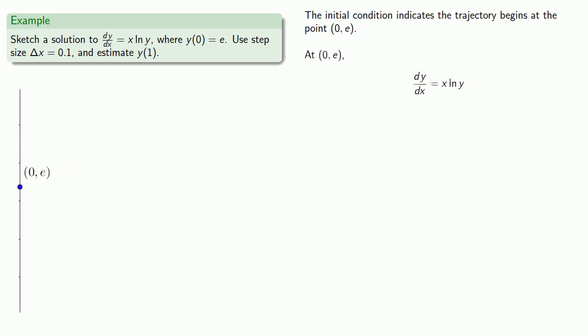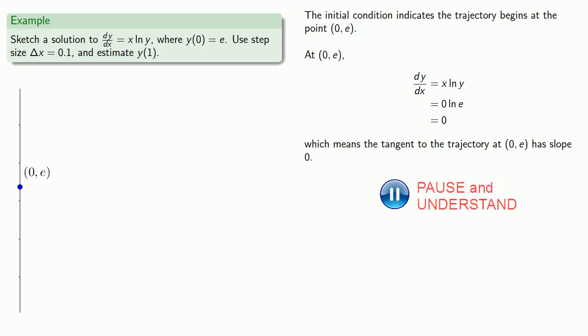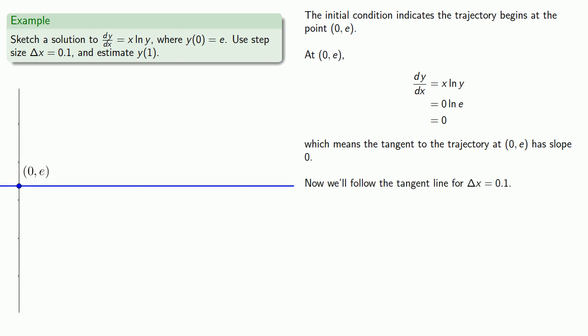At (0, e), the derivative will be 0, which means the tangent to the trajectory at (0, e) has slope 0. Now we'll follow the tangent line for delta x equal to 0.1, our step size.